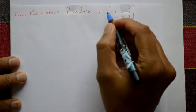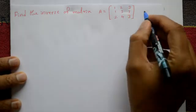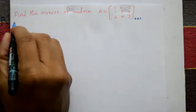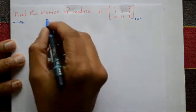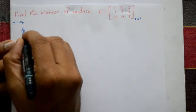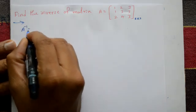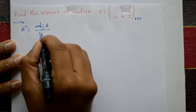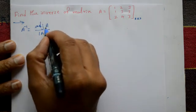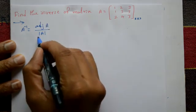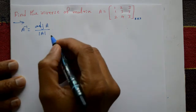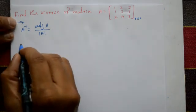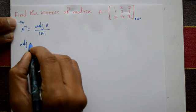Find the inverse of matrix A. A is given, order is three cross three — three rows, three columns. The inverse of A is equal to adjoint of A divided by determinant of A. First we need the adjoint of A, then the determinant of A.